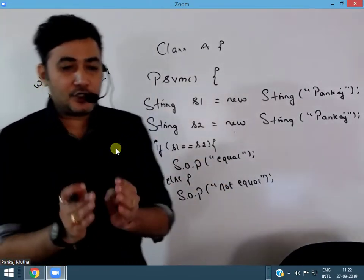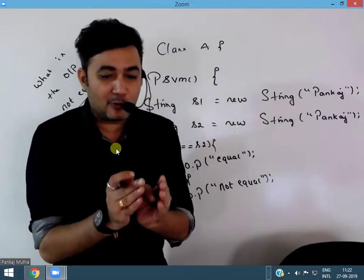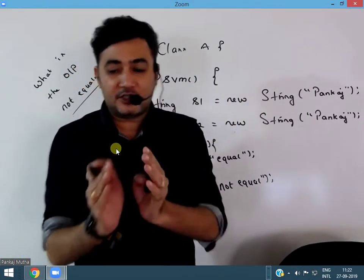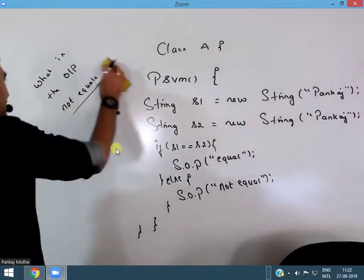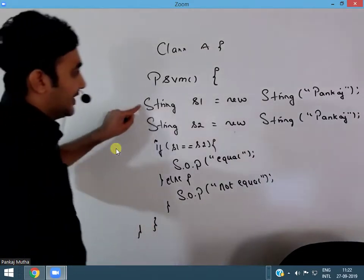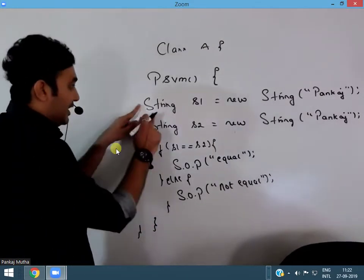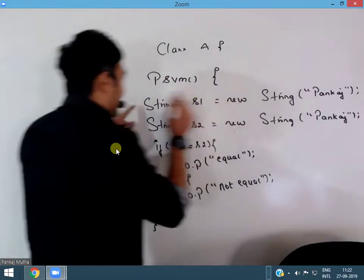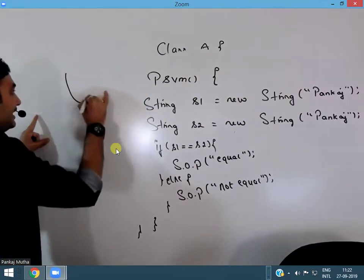Let's look at why the output is not equal, what is the reason behind it. In Java, string is a class. Whenever I use a new keyword, it means I'm creating an object.